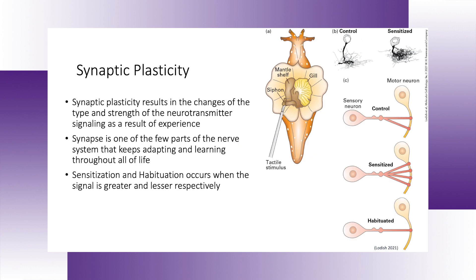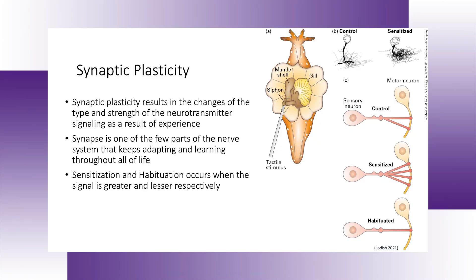Learning occurs through synaptic plasticity. Santiago Ramón y Cajal and others thought that learning was in the wiring, but synaptic plasticity at the synapse is one of the few parts of our brain that keeps learning and adapting throughout all of life. This can result in the types and strength of neurotransmitters being altered. For example, if you touch a hot plate and it hurts a lot, you'll be more sensitized and react more rapidly next time. But if your finger is fine, you might not pull back as quickly — that's sensitization and habituation.